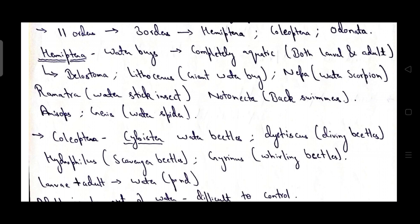It includes Belostoma, Lithocerus that is giant water bug, Nepa that is water scorpion, Ranatra that is water stick insect, Notonecta back swimmers, Anisops, and Garis that is water spider.